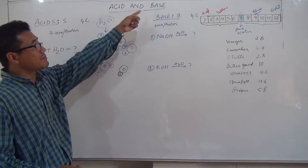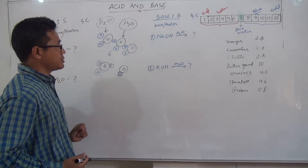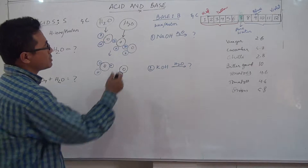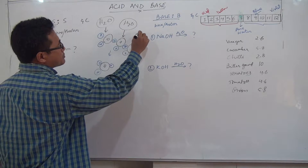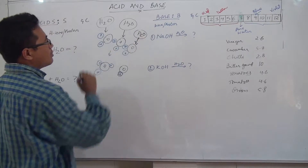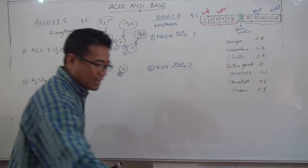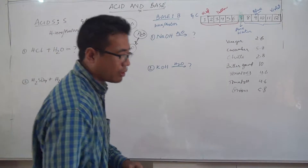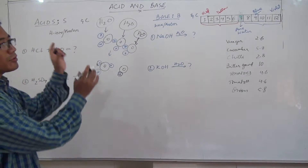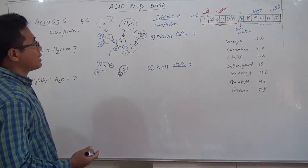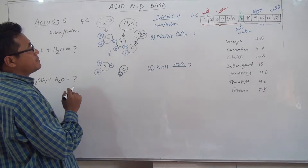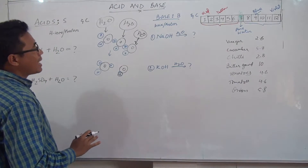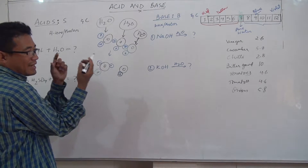Now let us come to understanding acid and base through water molecules. I've drawn here some water molecules — there are three H₂O molecules. In a beaker of water there will be trillions of water molecules, but I'm only going to take three because I can't draw more. When you take trillions of water molecules, what happens is they combine and get attracted to each other.